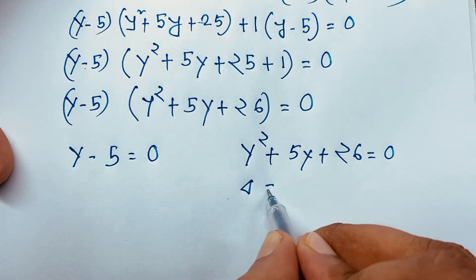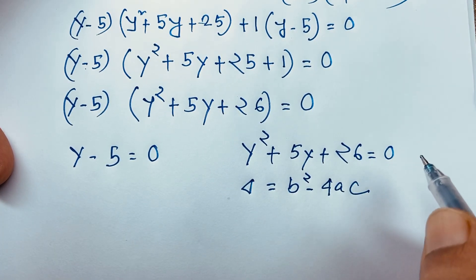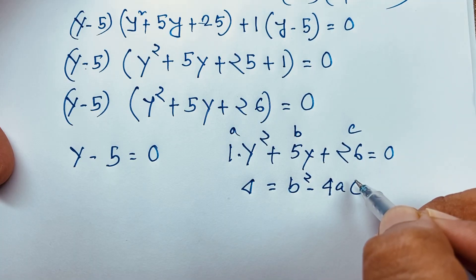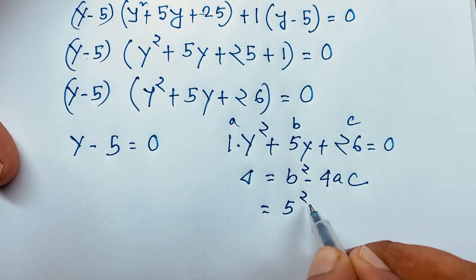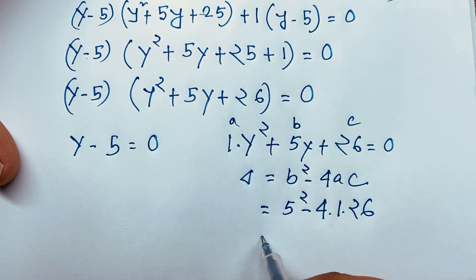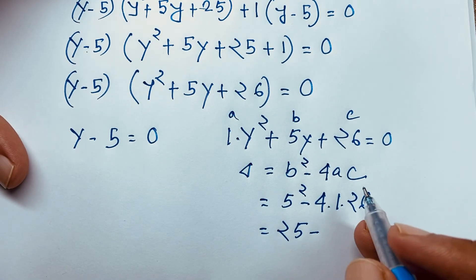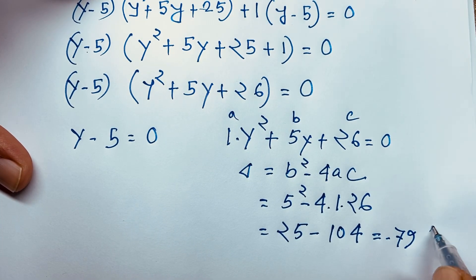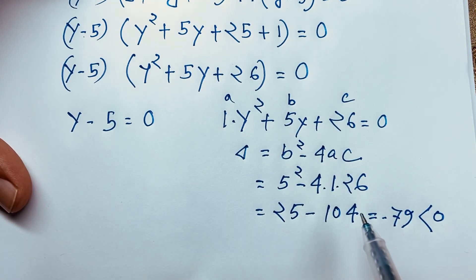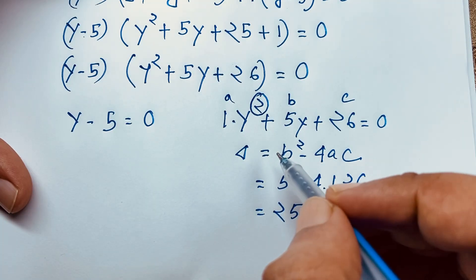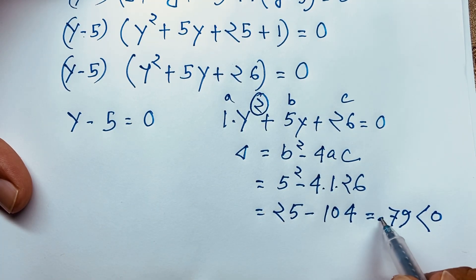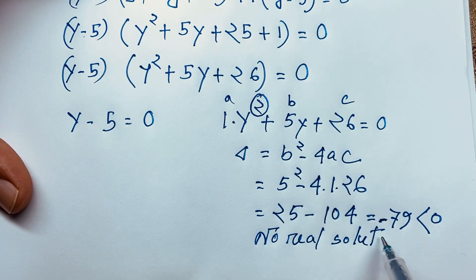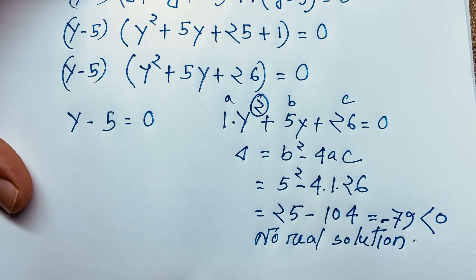Let's check the discriminant: b squared minus 4ac equals 5 squared minus 4 times 1 times 26, which gives 25 minus 104 equals negative 79. Since this is less than 0, both solutions of the quadratic are complex numbers, not real. So we find no real solution from this case.